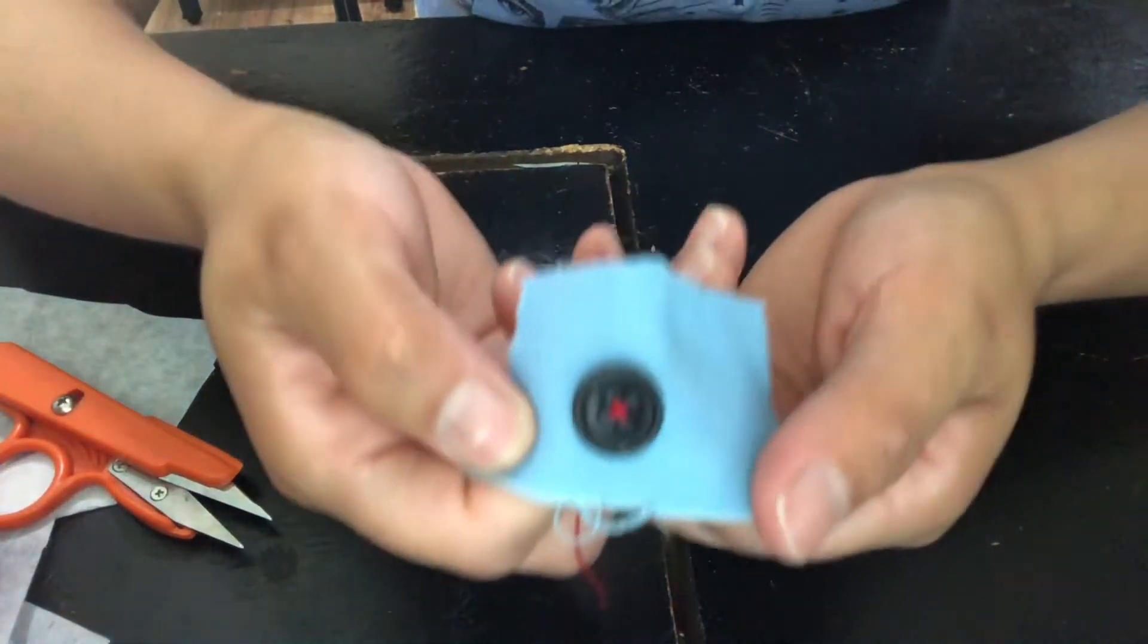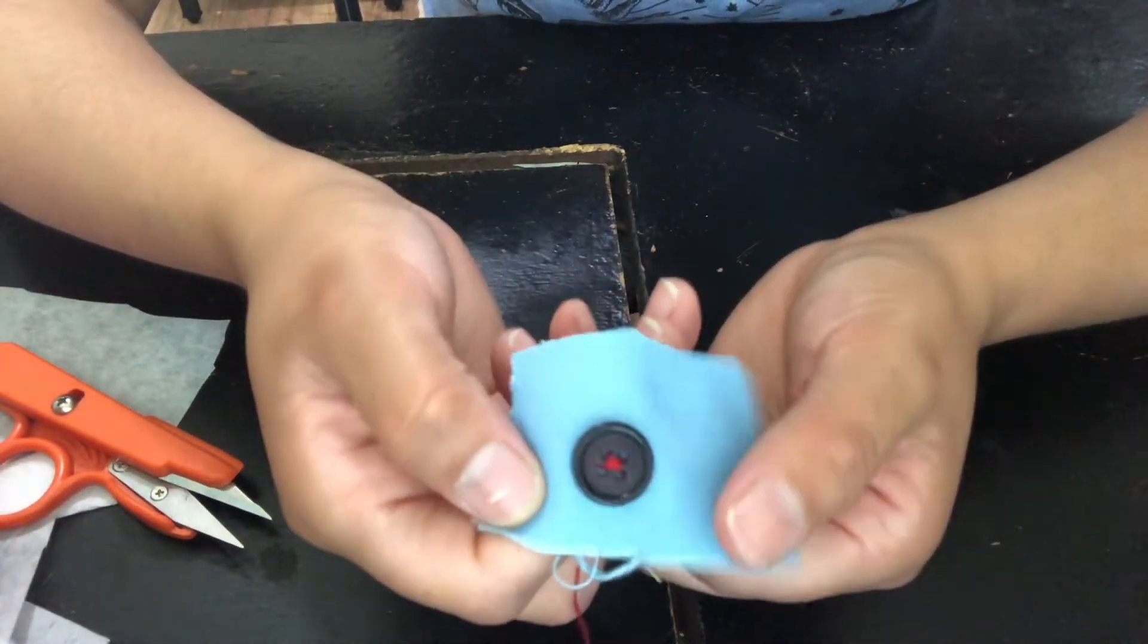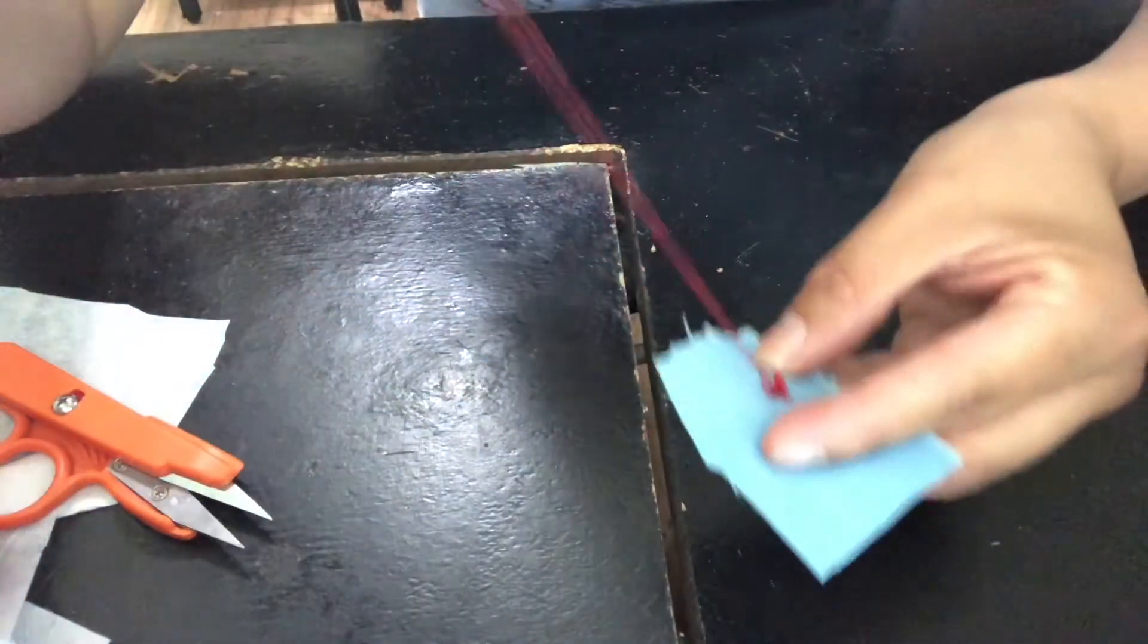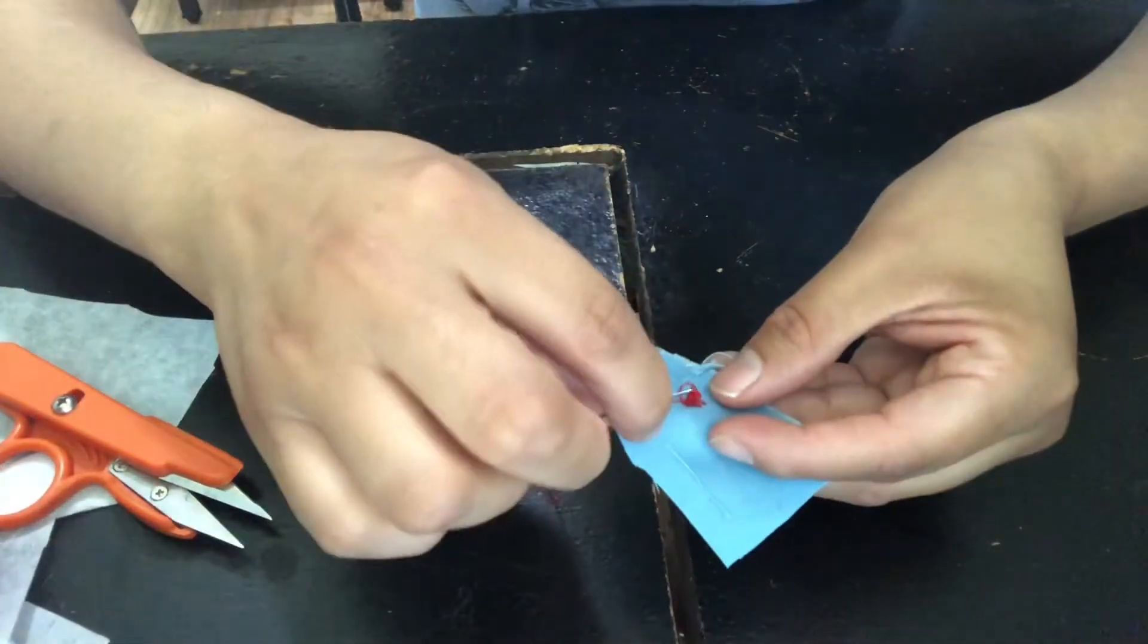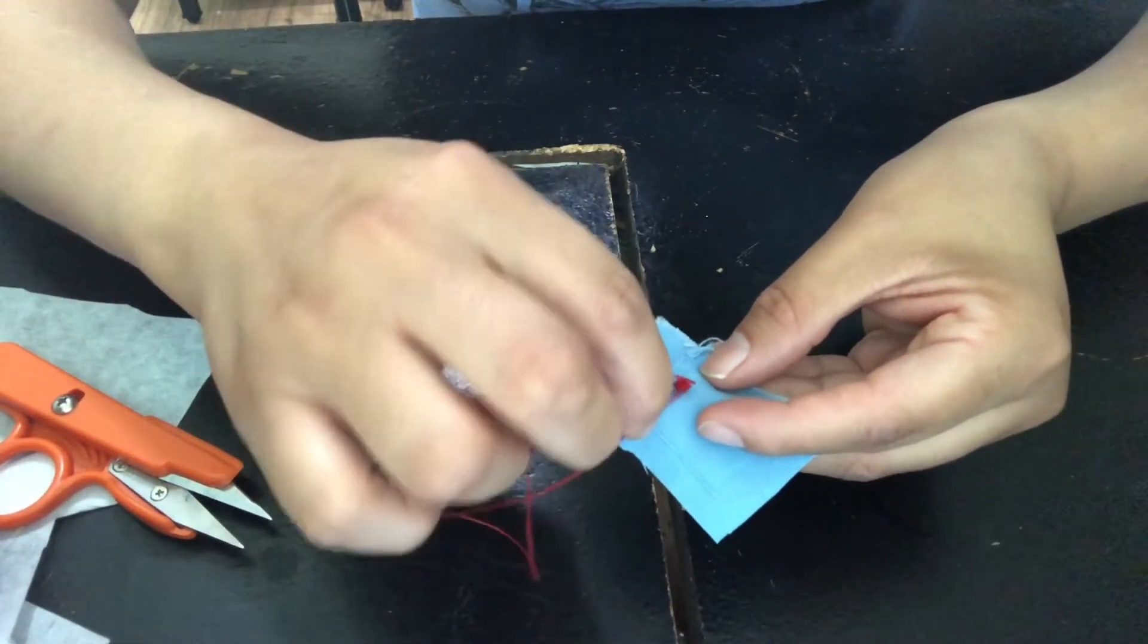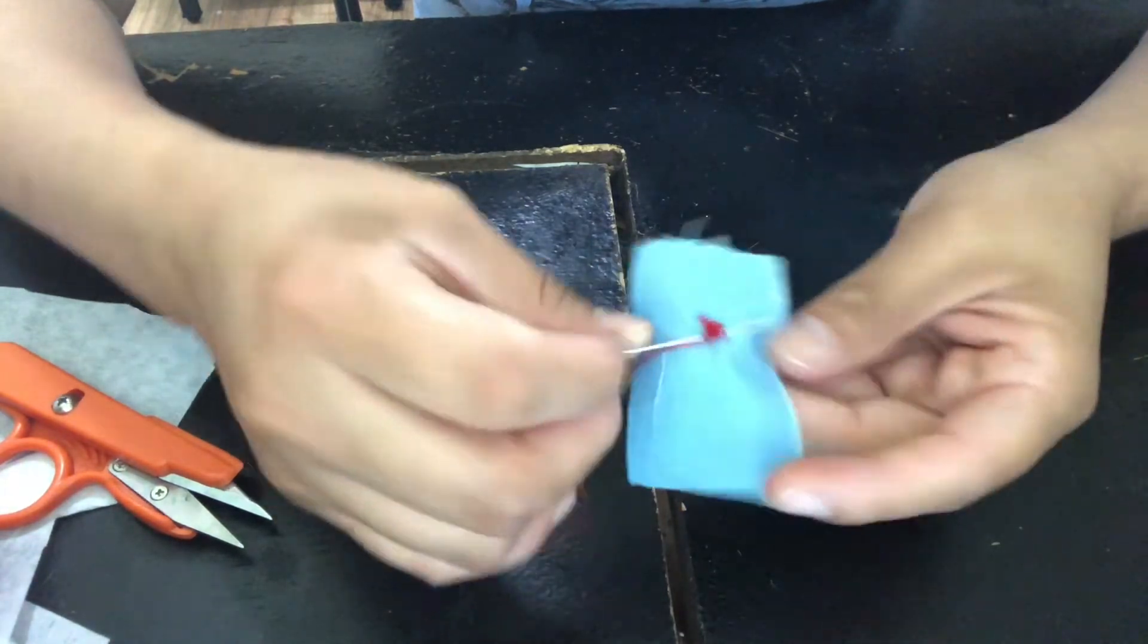And there you have it. I went over it two times and it looks like an X. Then you want to come around to the back of the garment and just put the needle through like that.